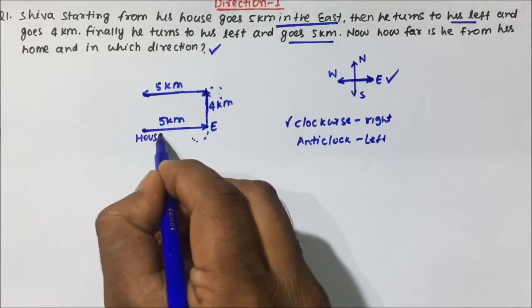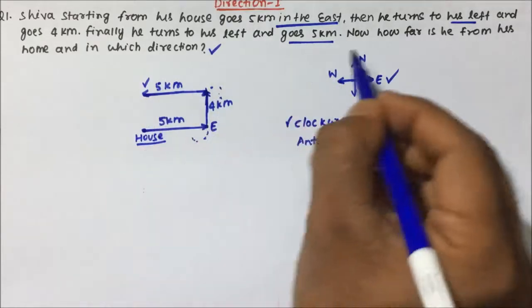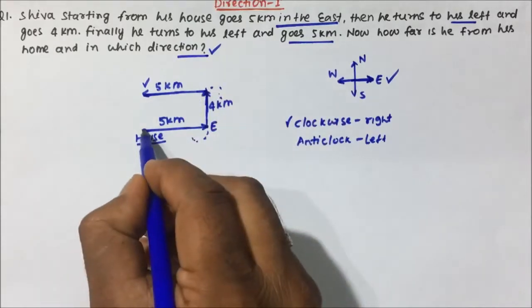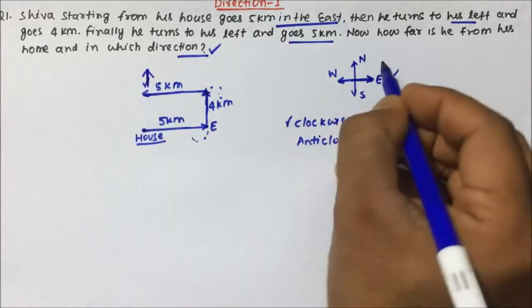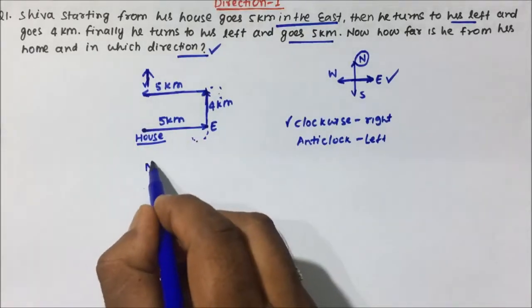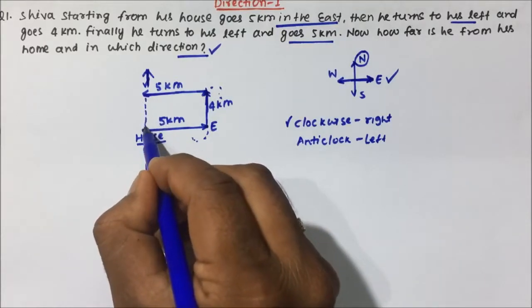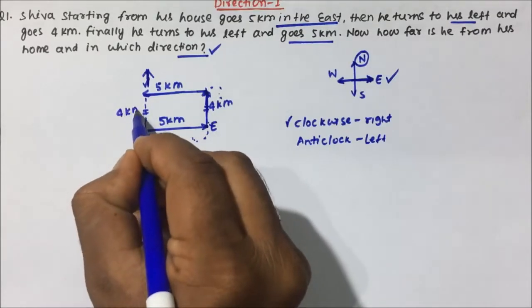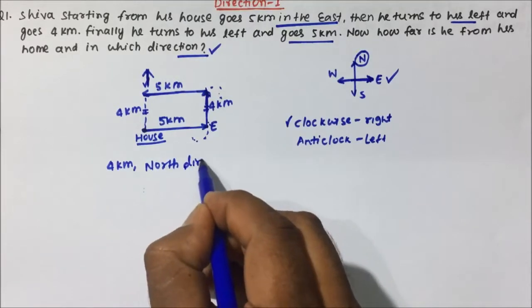Now how far is he from his home and in which direction? Siwa started from his house and is now at his final position. From his house, Siwa is in the north direction. The distance will be 4 kilometers, because this is the parallel distance. So from his house, Shiva is 4 kilometers away in the north direction.